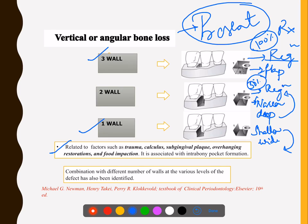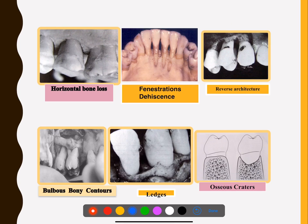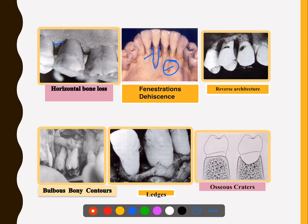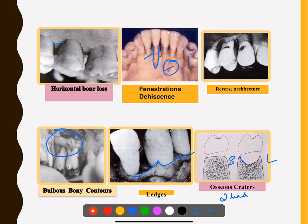Defects can be combined — sometimes from above it looks like only two walls, but deeper down you can see three walls, making it a combination defect. Clinical images show horizontal bone loss as even bone loss. Fenestration means having a hole in the bone; dehiscence means complete bone recession. Reverse architecture, bulbous bony contour, and ledge formations also need to be trimmed. Osseous craters are two-wall defects where only the buccal and lingual walls are intact and the bone in between is depressed.